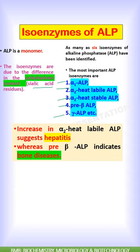An increase in alpha-2 heat-labile ALP suggests hepatitis, whereas an increase in pre-beta ALP indicates bone diseases.